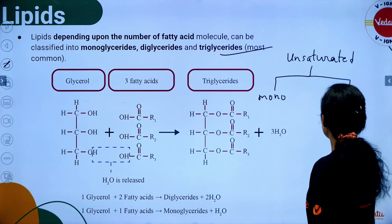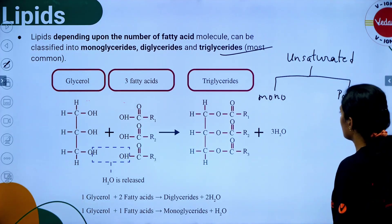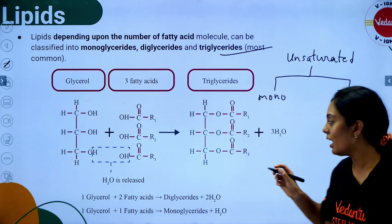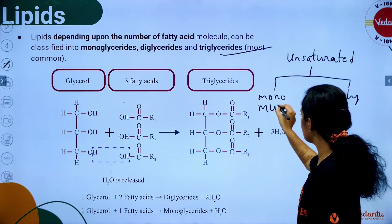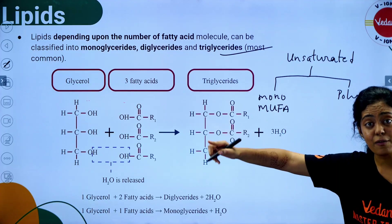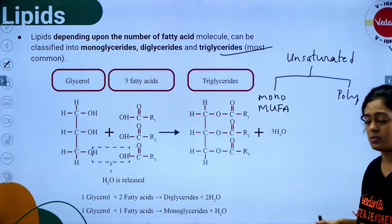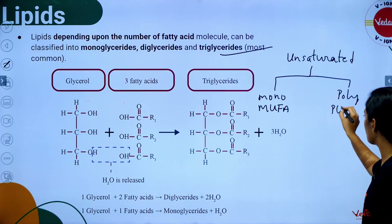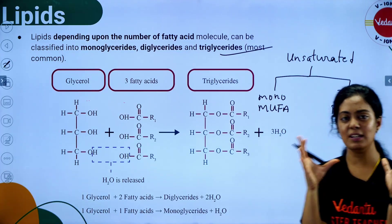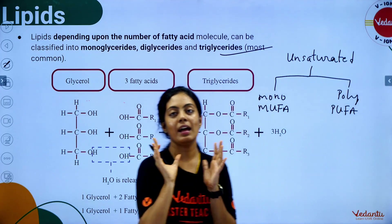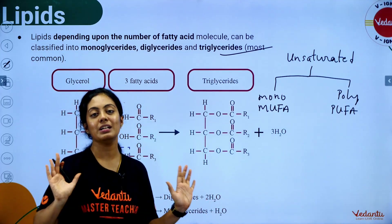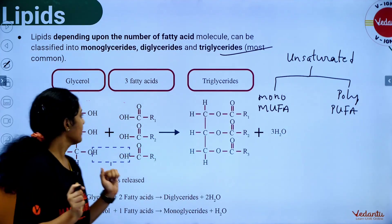Unsaturated fatty acids are classified as MUFA (monounsaturated fatty acid — only one double bond) and PUFA (polyunsaturated fatty acid). MUFA and PUFA are much better for your health than saturated fatty acids.